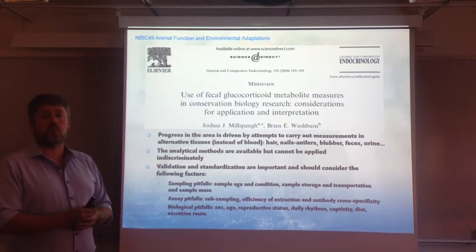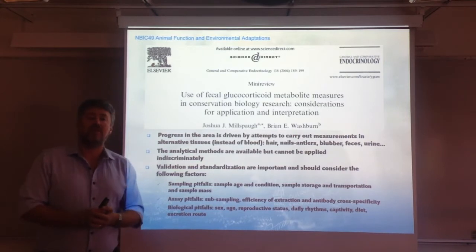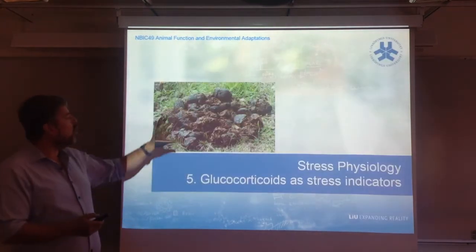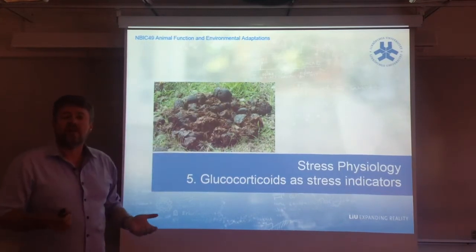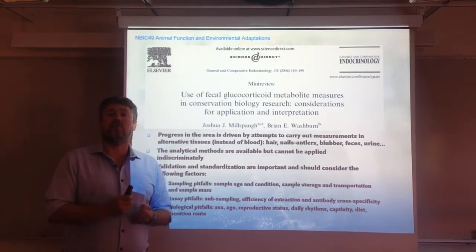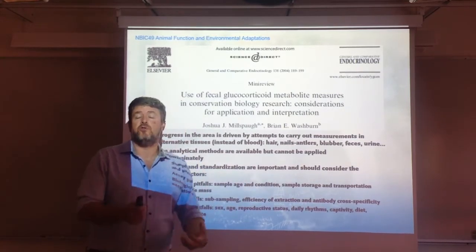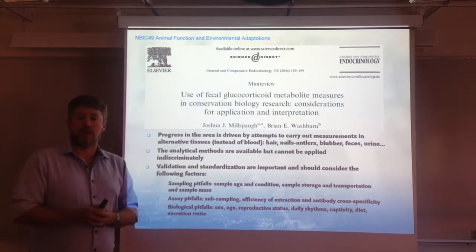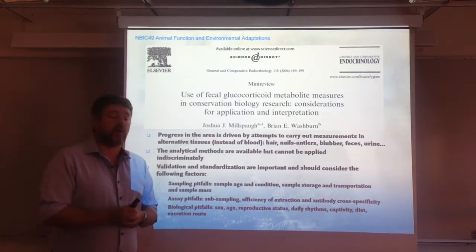How the samples are stored and transported is also important, given that most of this is usually done in field conditions. The authors also detail assay pitfalls — problems that arise during the assay. This has to do with subsampling procedures: if we have to take a smaller sample to do the analytics, where are we obtaining it — the surface, the top, the bottom, the middle? Is the antibody specific for glucocorticoids or a metabolite? Can we use an antibody raised against one species in another species? These are all important details for the assay.